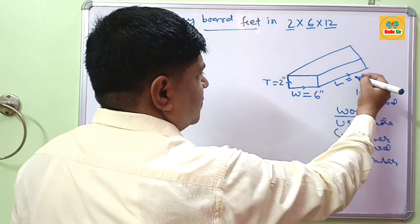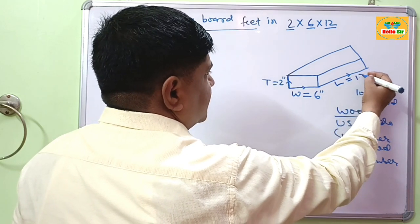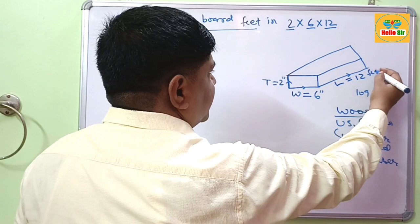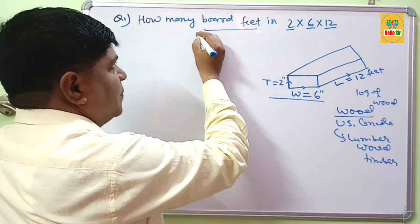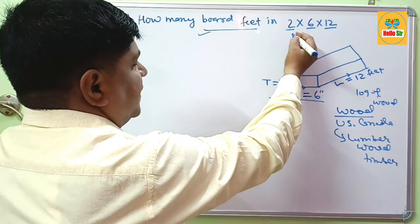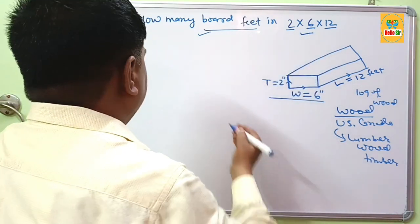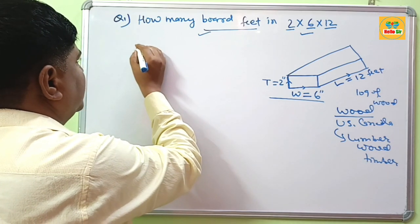And this is the length of wood, 12 feet. This is the dimension of wood and you have to calculate how many board feet in this dimension of wood. Generally, you are using the formula.